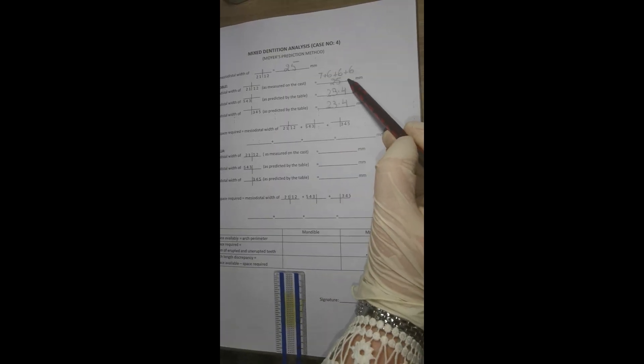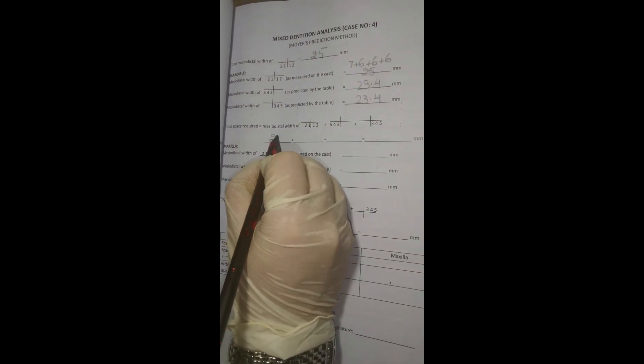Add widths of mandibular incisors and widths of mandibular canines and premolars to find out space required. 25 plus 23.4 plus 23.4 is equal to 71.8 mm. This is our space required. Write it down here as well.